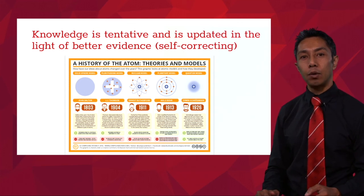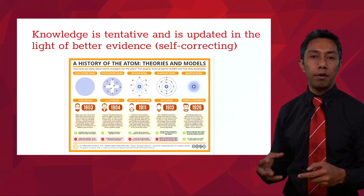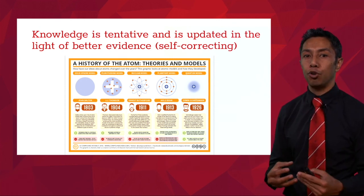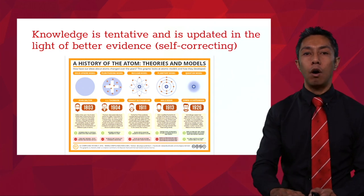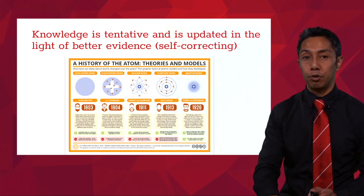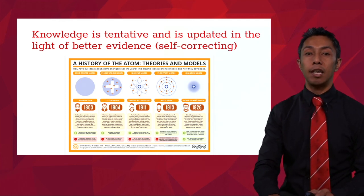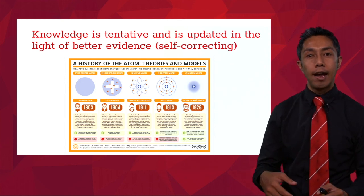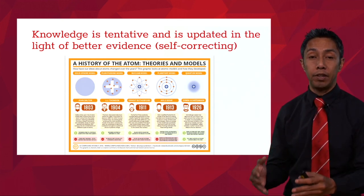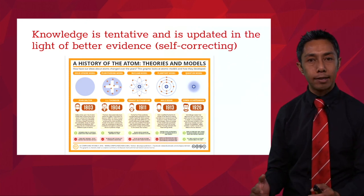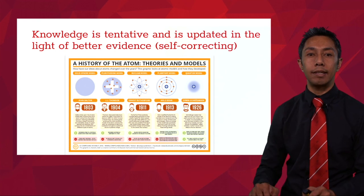Let's have a look at the epistemology, ontology and praxis of science. As I'm talking, I'd like you to classify each one of the concepts we're going to discuss as either epistemology — what counts as knowledge — as ontology — the view of reality that a particular field has — or whether it's a practice, in which case you put it in the praxis column. Let's get started.